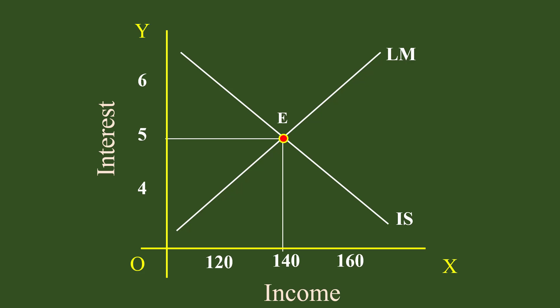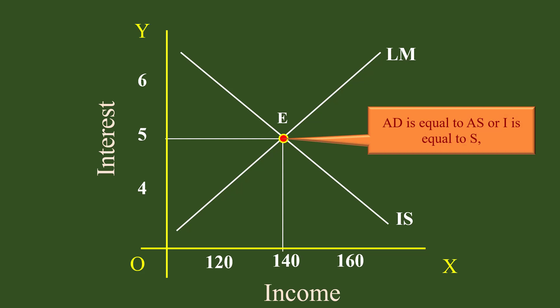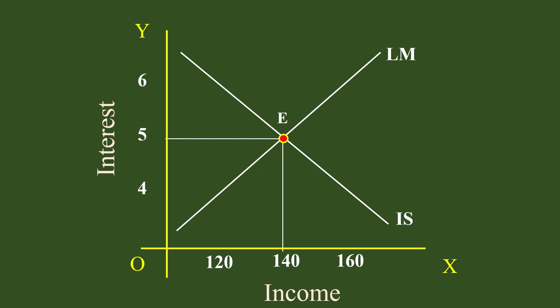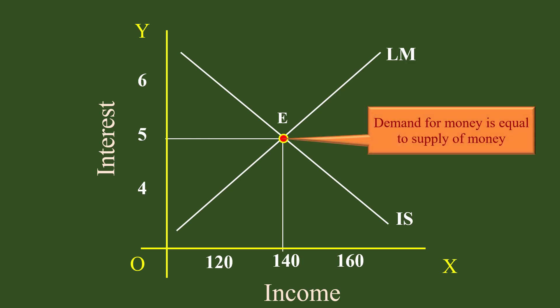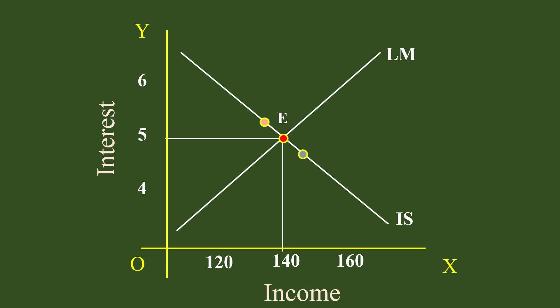Point E is common to both curves. It represents a combination of interest and income where both markets are in equilibrium. Aggregate demand equals aggregate supply and investment equals savings for the goods market, while demand for money equals supply of money for the money market. This is the only interest-income combination which brings equilibrium in both goods and money markets. Other points on the IS curve represent goods market equilibrium only, and other points on the LM curve represent money market equilibrium only.